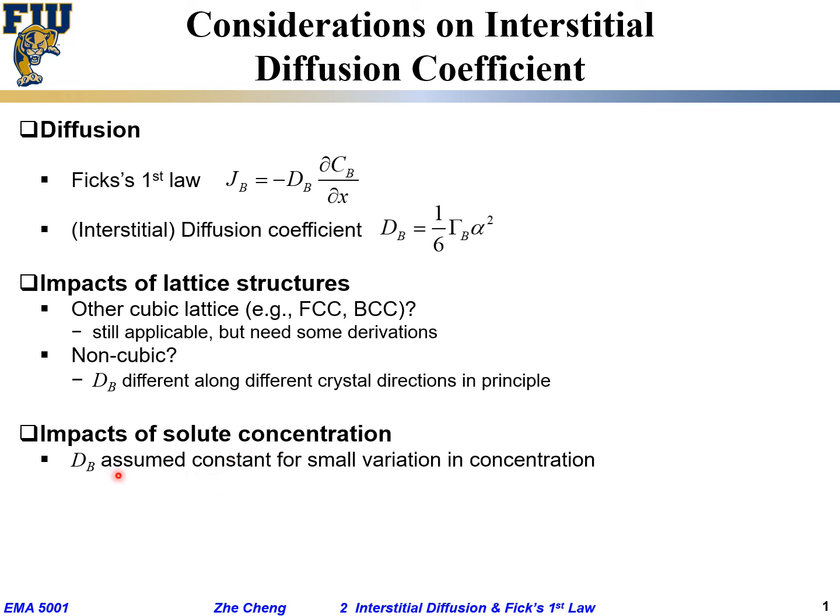When the concentration change is relatively small, we can assume the diffusion coefficient is constant. However, over large concentration range, if the concentration from one location to another location changes significantly, then we cannot assume D to be constant.